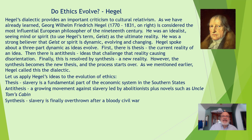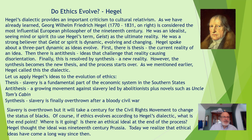Applying Hegel's ideas to the evolution of ethics: Thesis — slavery is a fundamental part of the economic system in the southern states; it is simply what is. Antithesis — a growing movement against slavery led by abolitionists, plus novels such as Uncle Tom's Cabin. Synthesis — slavery is finally overthrown after a bloody civil war. Ideas have evolved and changed. Slavery is overthrown, but it will take a century for the civil rights movement to change the status of blacks. If ethics evolves according to Hegel's dialectic, what is the end point? Is there an ethical ideal at the end of the process? Hegel thought it was 19th century Prussia; today we realize that ethical ideas have come a long way since then and are constantly evolving.